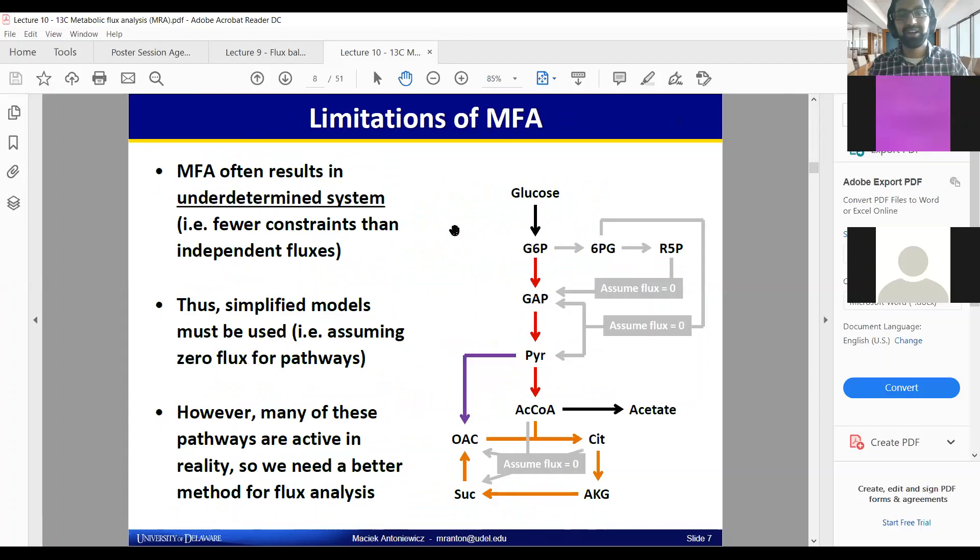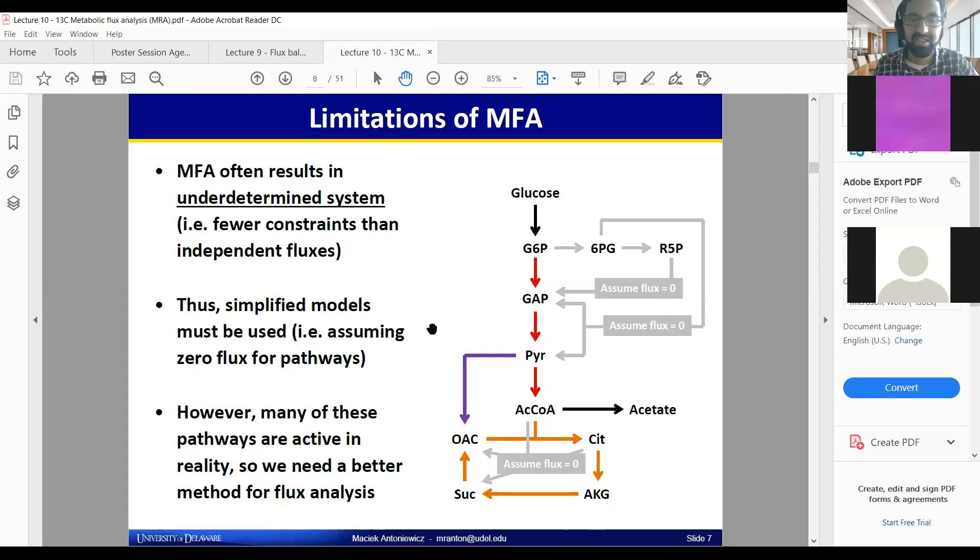The problem that we're trying to solve for here is that you don't actually know what all your fluxes are. This is especially complicated when you have multiple routes to the same molecule. A lot of metabolic flux models will just assume that there's zero flux going on through pathways just to make things simpler, but they might be active.